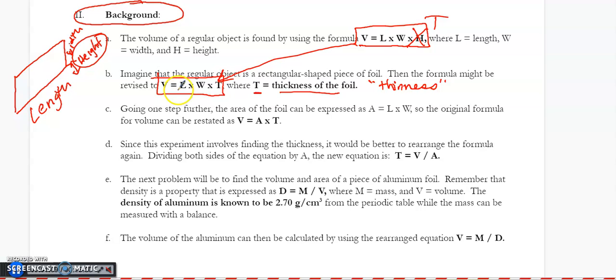If you take a look at this formula right here, length times width is easily measurable. That's known as the area. So area is length times width. So I'm going to substitute that in here and get volume equals area times thickness.